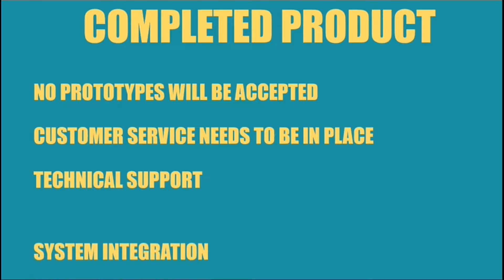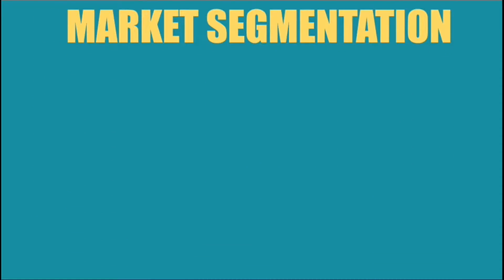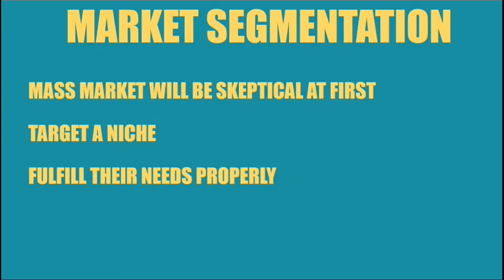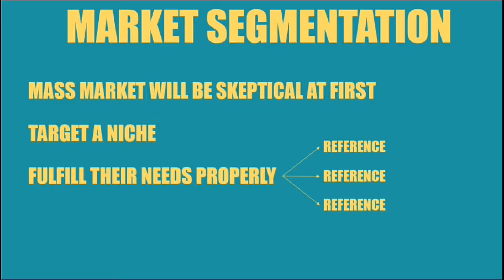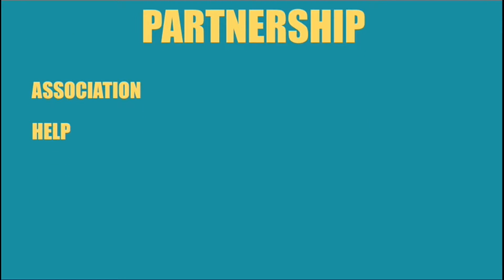System integration also needs to be done — if you want me to elaborate on that technical term, you can comment below. The next way you can cross the chasm is through market segmentation. The mass market is always going to be skeptical about a new technological product or service at first. To solve that problem, you need to target a niche market and fulfill their needs properly. If you are successful in a small market, they are going to provide references to a large number of people — and the mainstream market always looks for references before buying any new product or service.